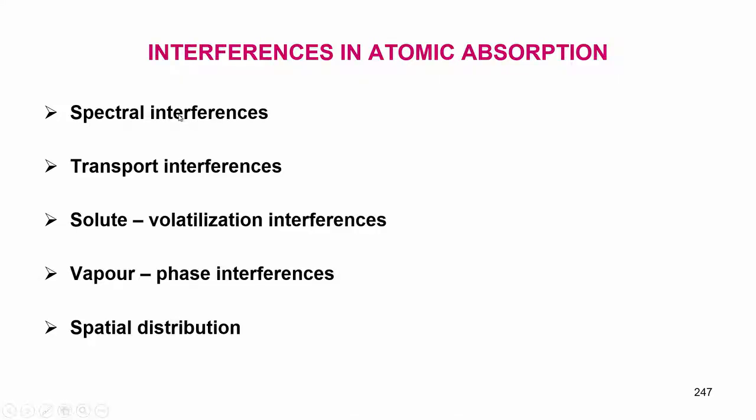Greetings. In the last class I discussed about the interferences in atomic absorption, and I told you that even though atomic absorption is a specific element phenomenon, there will be interferences because we are going to generate free atoms in the flame atmosphere. The different types of interferences are spectral interferences where the resonance lines match, transport interferences where there may be different heights, vapor phase transport, vapor phase reactions, etcetera.